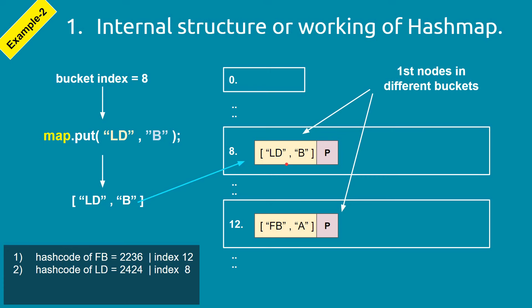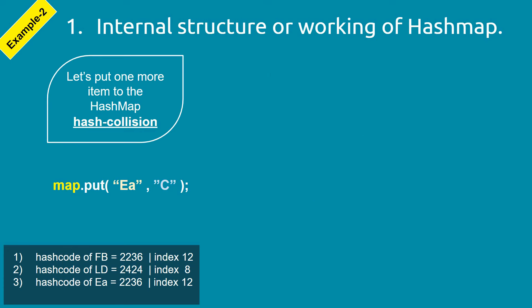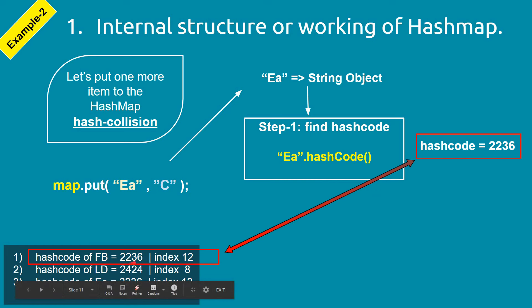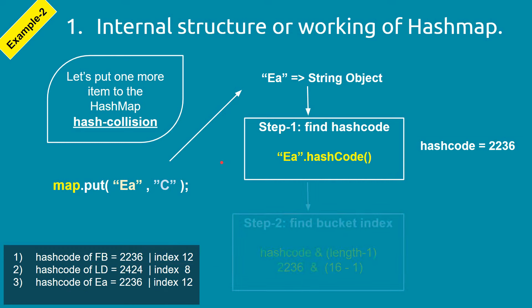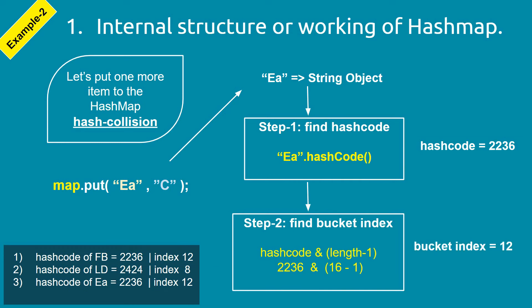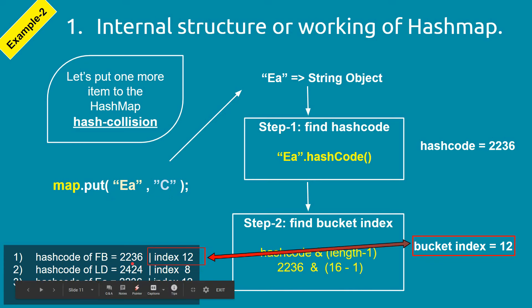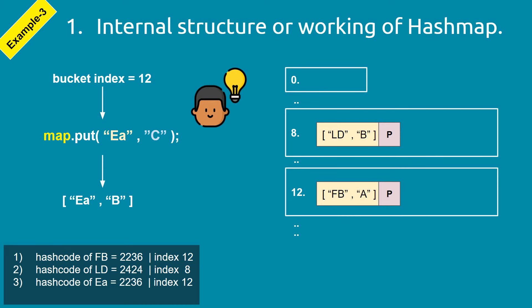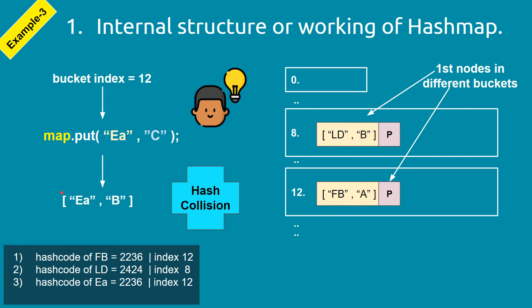Now let's look at a third example that introduces hash collision. JVM takes the key, finds the hash code — which is 2236, the same as the first example's key 'AB'. So the calculated bucket index is again 12. But we already have a key-value pair in bucket index 12. This situation — where JVM wants to put a key-value pair in a bucket that already has one or more nodes — is called a hash collision.